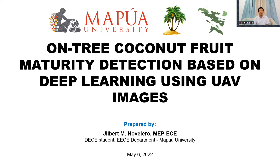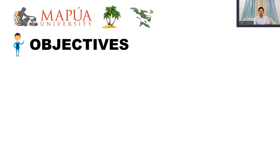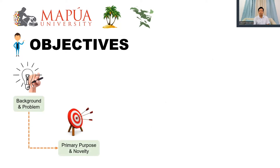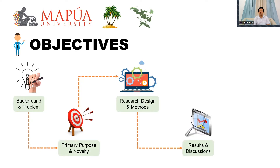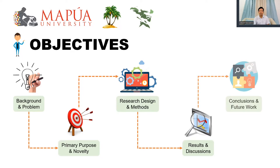Let me introduce my study entitled 'On-Tree Coconut Fruit Maturity Detection Based on Deep Learning Using UAV Images.' Before we dive into the discussion, let me share the goals we want to achieve: first, to share the background and problems from the literature synthesis; second, to provide the purpose and novelty of the proposed system; third, to discuss the methodology; fourth, to report the results; and finally, to provide conclusions and future endeavors.